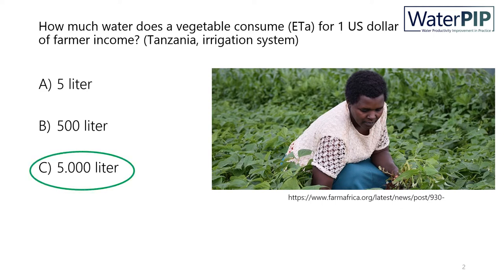This is about the volume of two Olympic swimming pools — not one, but two. So you immediately see that a farmer requires a lot of water to generate just one US dollar of income, and that the economic value of water is relatively low, meaning that farmers need a lot of water to generate income.